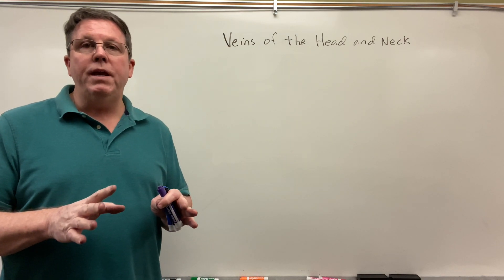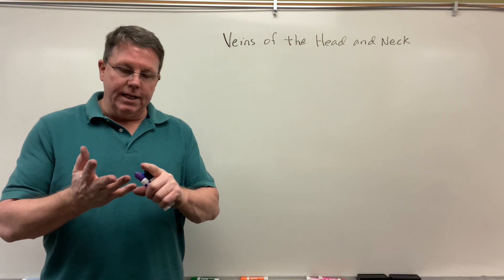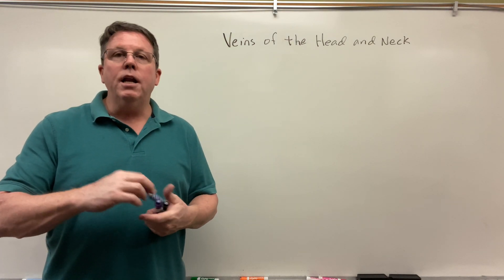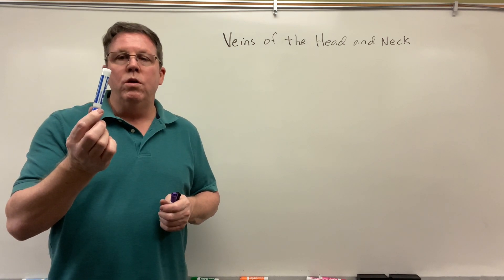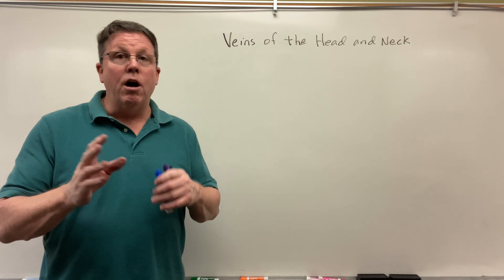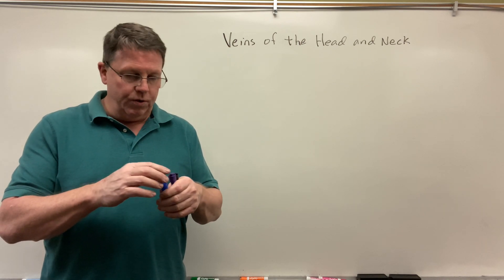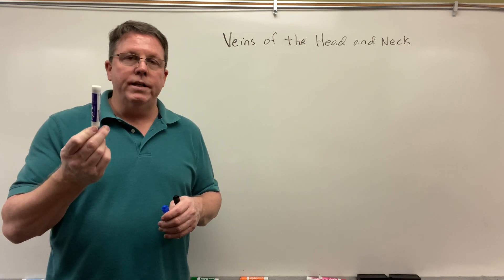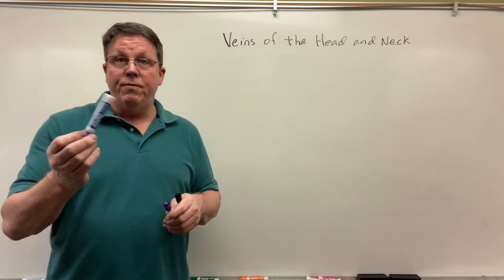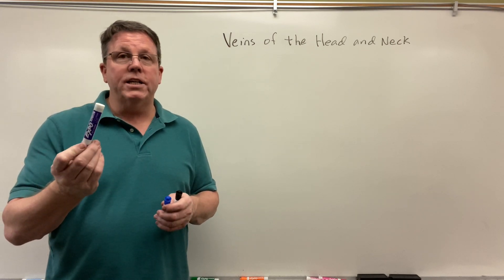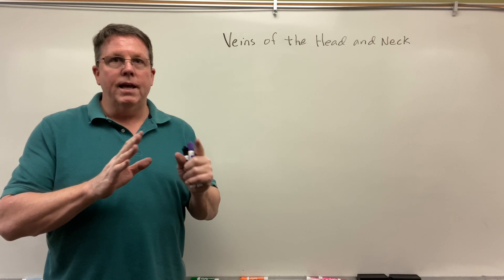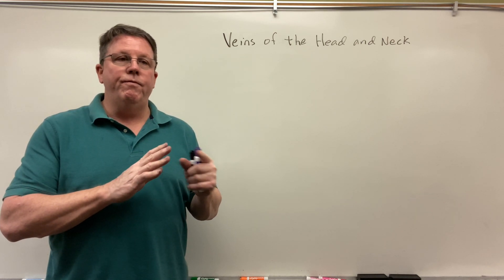We're going to be looking at two main veins today: the internal jugular vein and the external jugular vein. I'm going to use blue to show what drains into the internal jugular vein, although a lot of veins will go into both. I'm also going to use purple to show the external jugular vein. So blue will be for internal, purple is for external, but some veins can go into both.